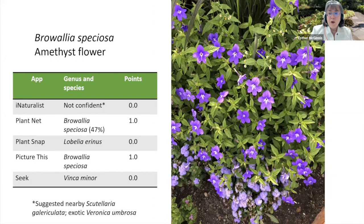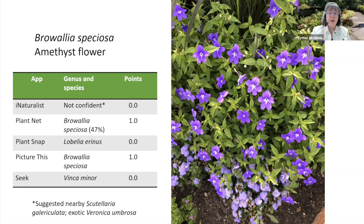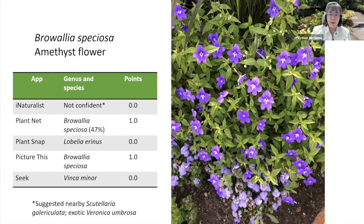Moving to annual flowers, this is Browallia speciosa — a somewhat uncommon but great bedding plant for shady situations. Both PlantNet and PictureThis were able to identify it down to the species.